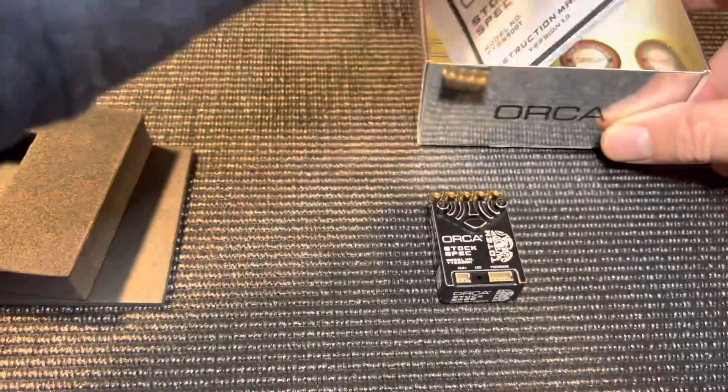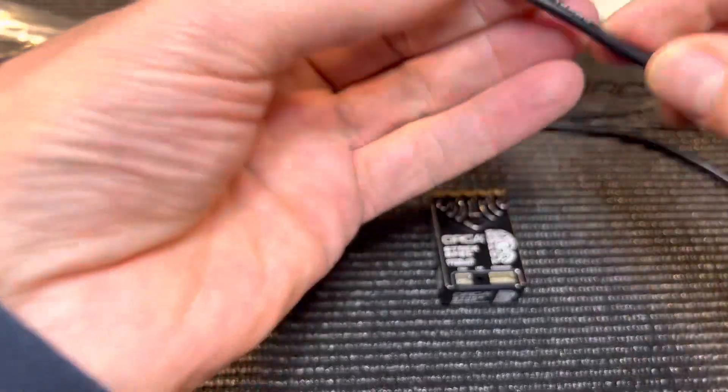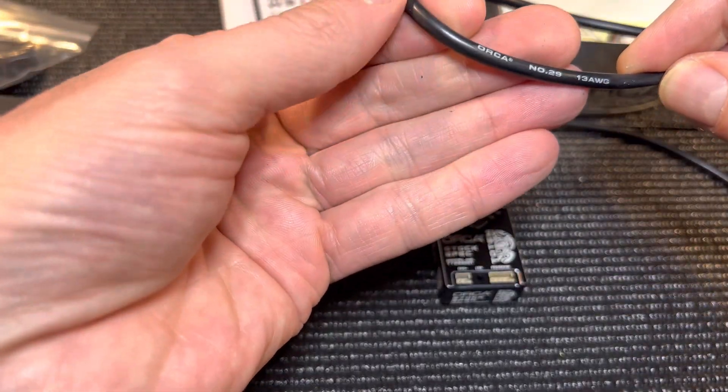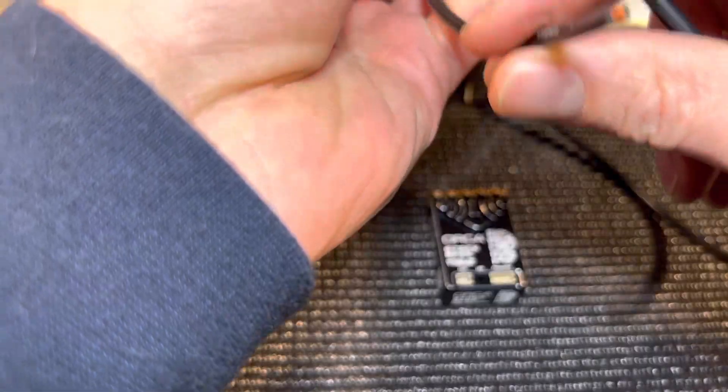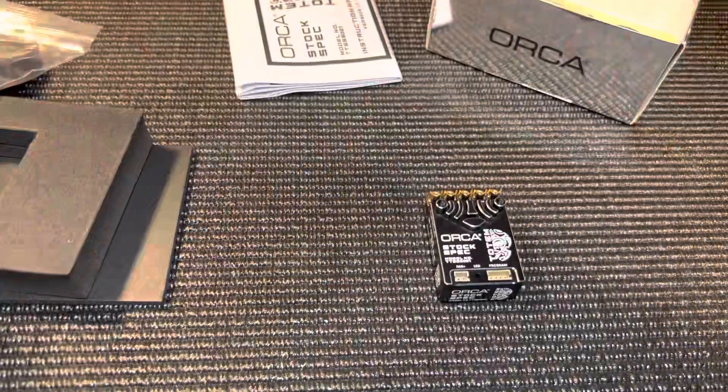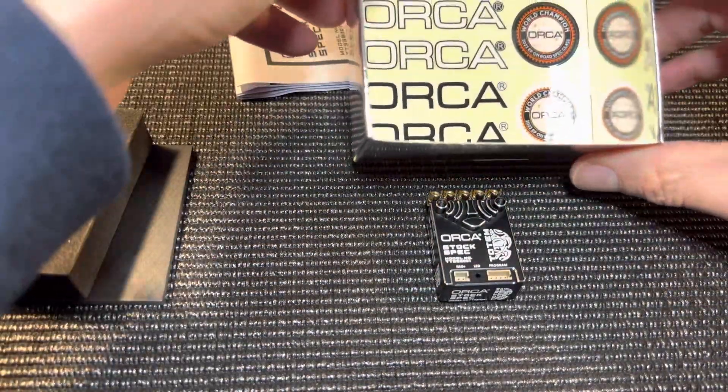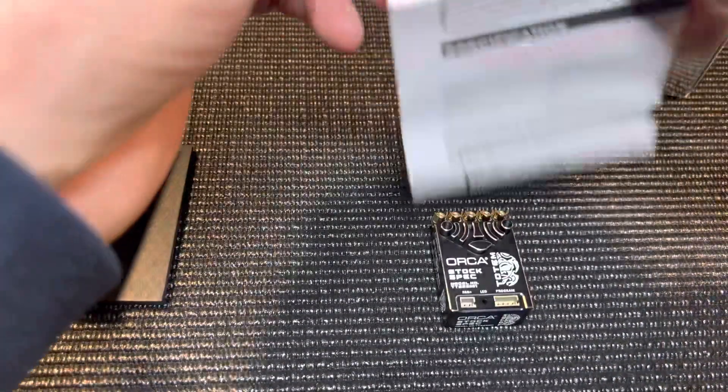I've got some wire, nice super flexible 13 gauge, good for stock, Orca branded copper wire. That's really nice flexible silicone wire. Some Orca stickers in the bottom and here's the instruction manual.